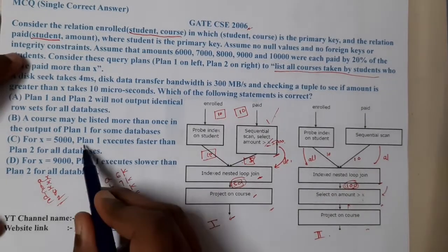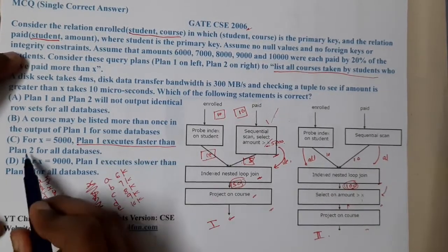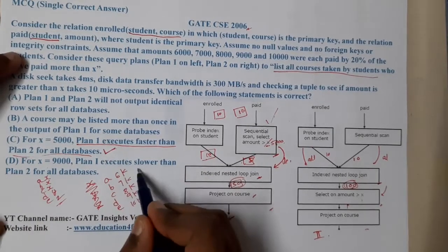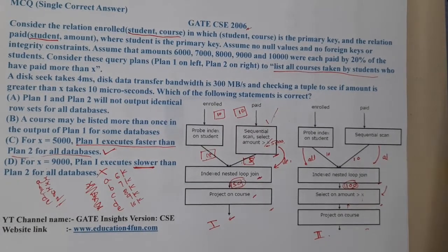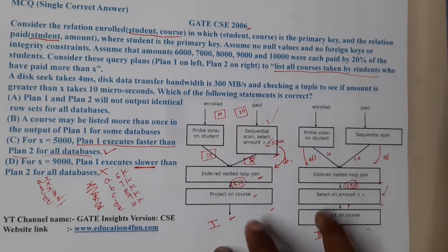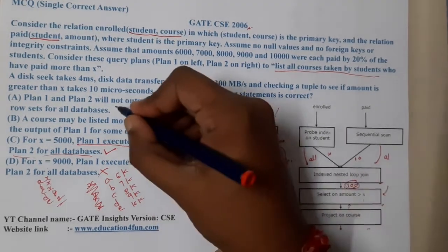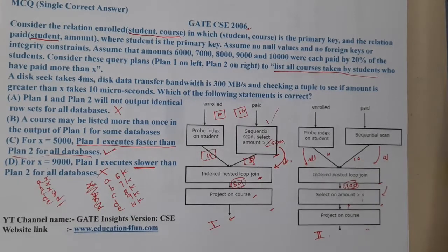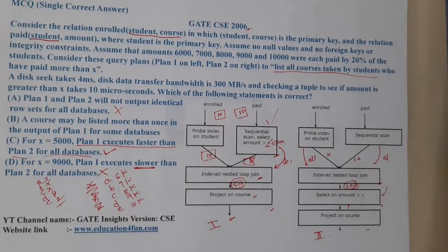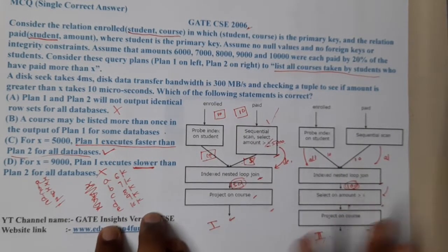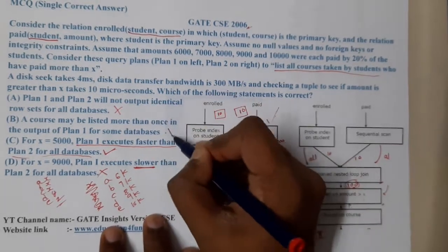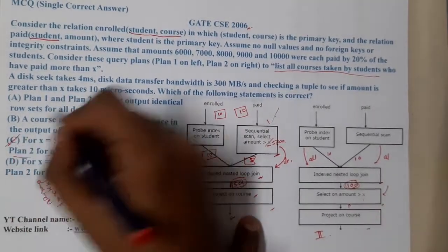Plan 1 executes faster than Plan 2 on all databases, so option D (Plan 1 is slower for x = 9000) is absolutely wrong. Option A says Plan 1 and Plan 2 give non-identical output — both are doing the same thing, so that is wrong. Option B says a course may be listed more than once in Plan 1 but not Plan 2 — both plans produce the same output, so that is also wrong.